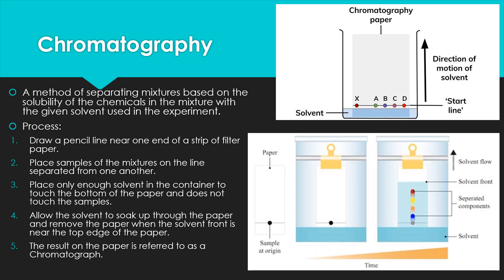Now let's look at chromatography, which has a little more complexity to how it works. Chromatography is a method of separating mixtures based on the solubility of the chemicals in the mixture with the given solvent used in the experiment. We've got a couple of pictures here for reference. At the bottom we draw a starting line using pencil, because pencil won't smear during our experiment the way ink could.